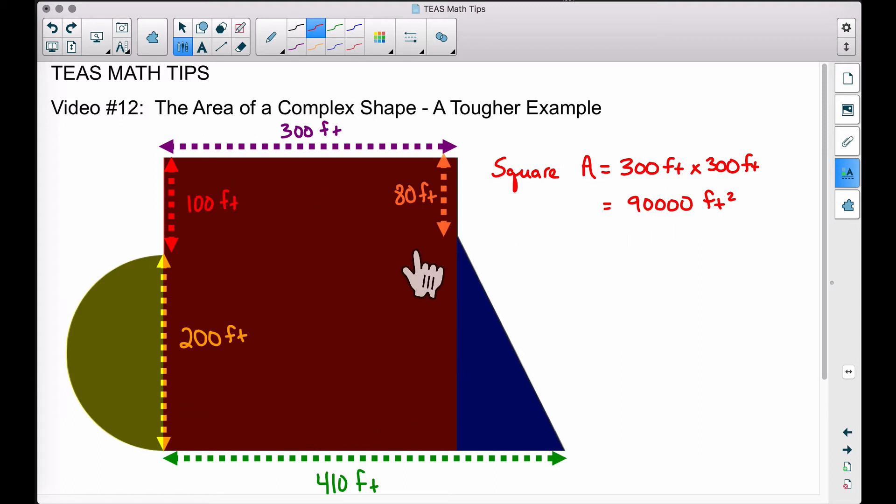So that's the area of this square. Now let's move over here to this half circle. The diameter right here in yellow—the diameter of this half circle is 200 feet, which implies that the radius of this half circle is going to be 100 feet.